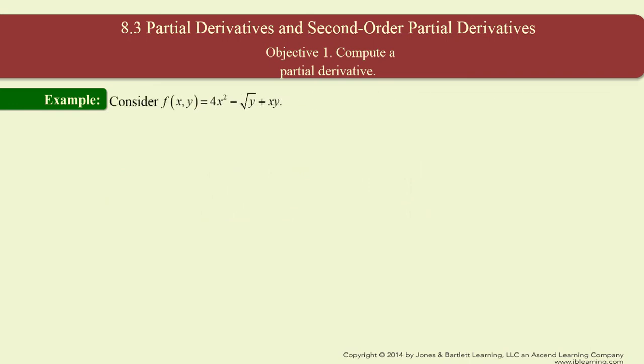Let's look at this example: f(x,y) = 4x² − √y + xy. In part (a), determine the partial with respect to x. In part (b), determine the partial with respect to y. For part (a), wherever I see a y I treat it as a constant and differentiate normally. For part (b), wherever I see an x I treat it as a constant and differentiate normally.